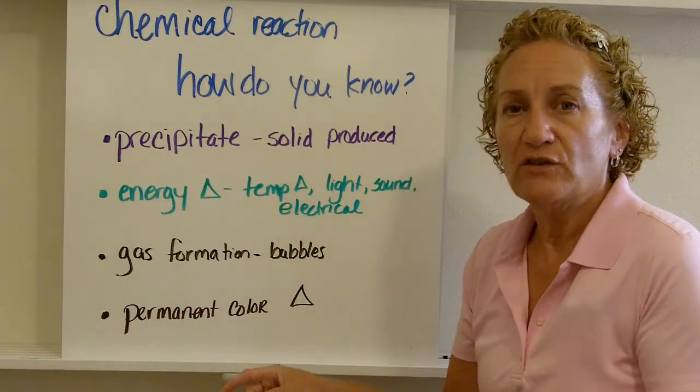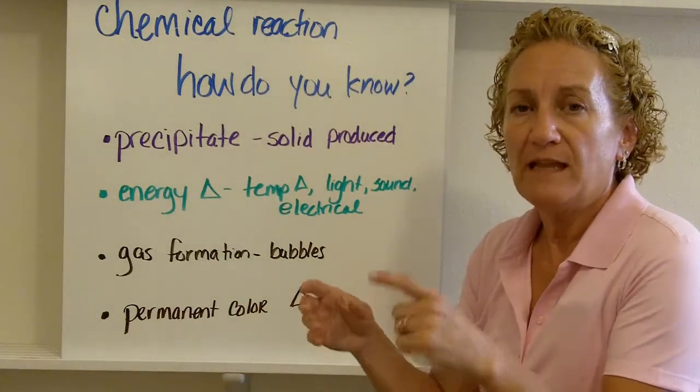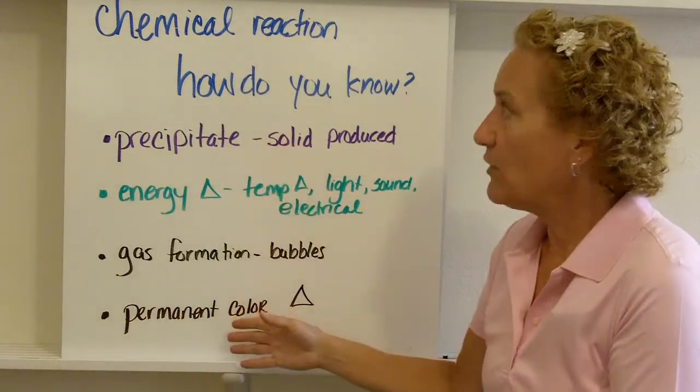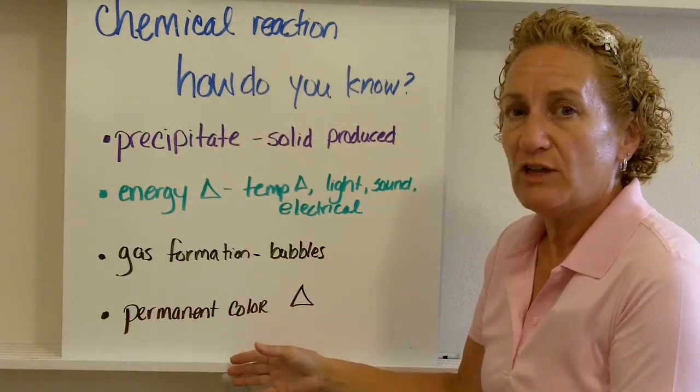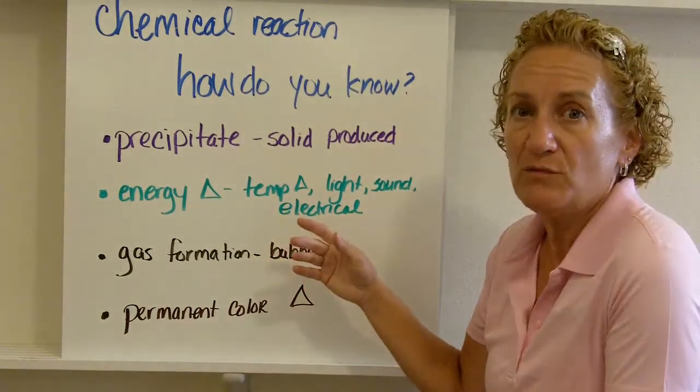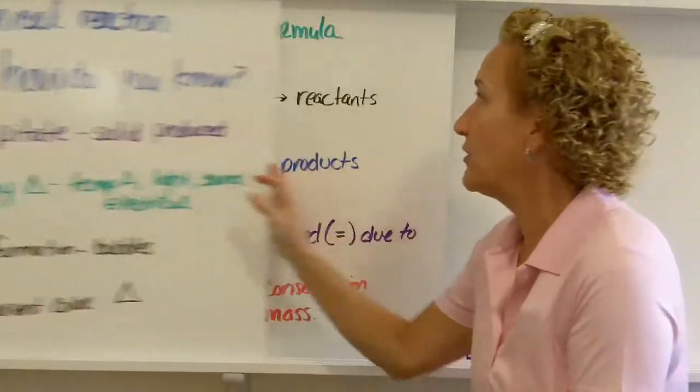And the last thing that we look for is a permanent color change. So if something goes from clear to pink and stays pink, you know you've had a chemical reaction. So here are the four things that you look for when you're looking for evidence of a chemical reaction. Did any one of those occur? Or sometimes more than one. But you need at least one for evidence that a chemical reaction has occurred.